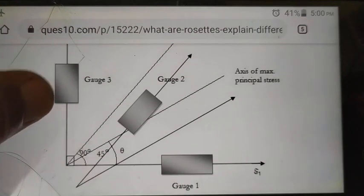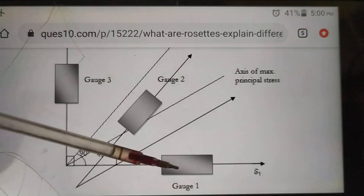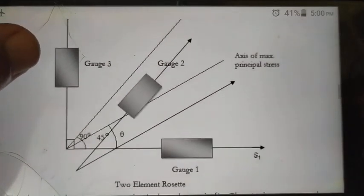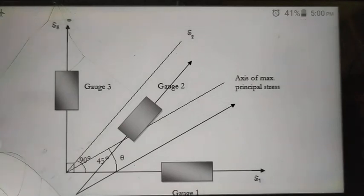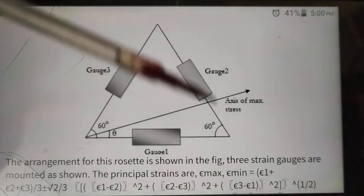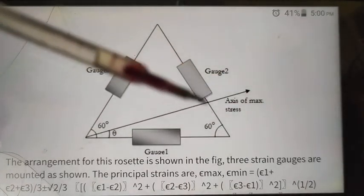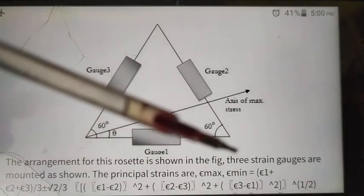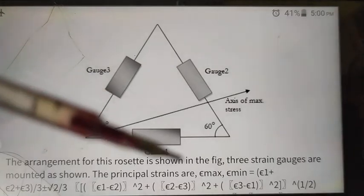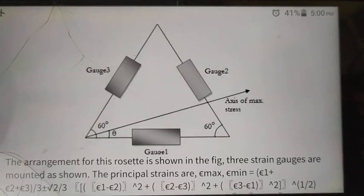The second type is the three-element rectangular rosette, with gauge one, gauge two, and gauge three. These are used where you don't know the exact value or location of the strain — it is an unknown value. The third type is the delta rosette arrangement, where the inclinations are: the first gauge at zero degrees, the second at 120 degrees relative to the first, and the third gauge at 240 degrees relative to the first gauge.